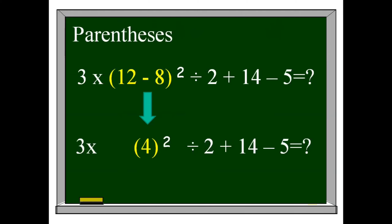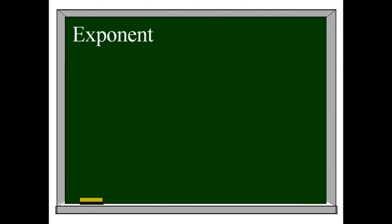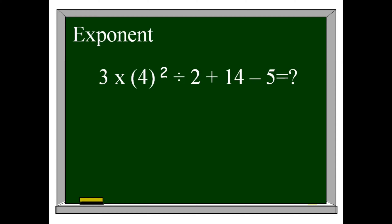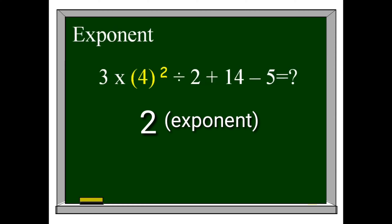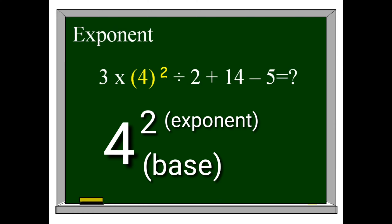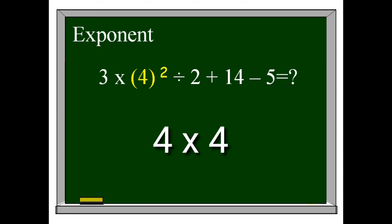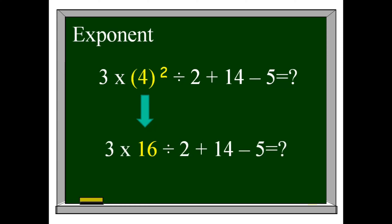Next is Exponent — the second step. We have 4 squared. 4 is the base and 2 is the exponent, which indicates the number of times we multiply 4 as its factor. So that is 4 times 4, because 2 indicates we multiply 4 twice. 4 times 4 is 16. Don't forget to write the remaining components of your expression.